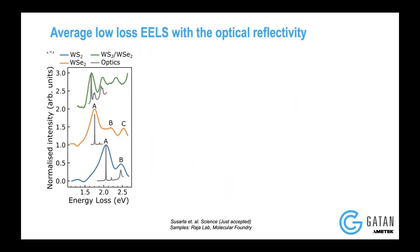Once we were confident of our background subtraction routines, we tried to compare our spectra with optical reflectivity measurements. What you see is a nice correlation between the things that you see in optical reflectivity measurements and the things you see in low-loss EELS, including the subtle negative shift that you have as compared to the A-exciton in WSe2 in the WS2/WSe2 heterostructure.